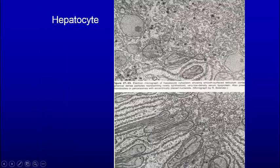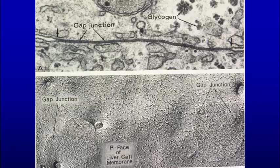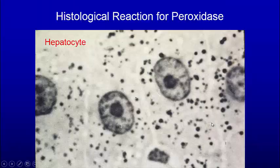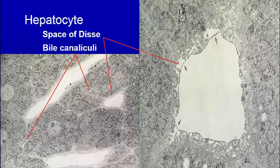The hepatocyte has lots of smooth endoplasmic reticulum. It also has peroxisomes — you can see the crystalline core with a single membrane around it. The smooth endoplasmic reticulum is involved in detoxification. The hepatocyte also has gap junctions between adjacent cells for communication, and it stores glycogen as well. Here we can see the gap junctions between adjacent cells, and there are many peroxisomes stained in through there.